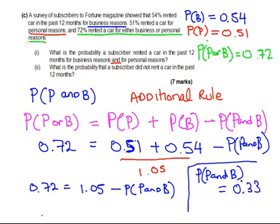What is the probability that a subscriber did not rent a car in the past 12 months? Now, let's just be clear that there's only two reasons for renting a car, business reasons and personal reasons. Now, 72% rented a car, this is what we are told here, in this part. So, what is the complement of that? It is 0.28.